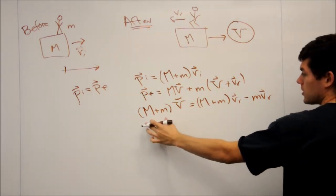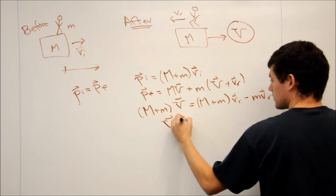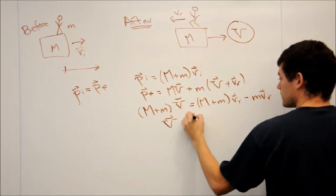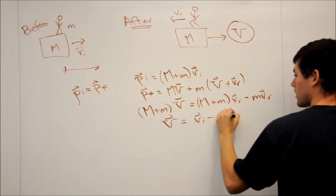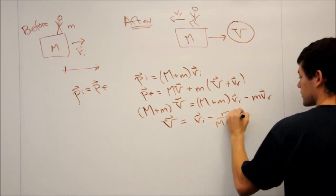And now we can divide out the big M plus little m, and that's going to give us big V equals VI, and these terms cancel, minus little m over big M plus little m times VR.